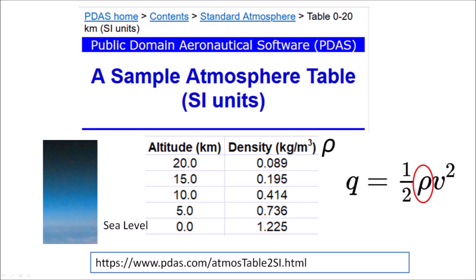Notice that the air density decreases with altitude, and it is most dense at sea level. This table displays the air density from an altitude of 20 km above the surface of the earth to sea level in 5 km intervals. These values allow us to estimate the dynamic pressure at various altitudes.